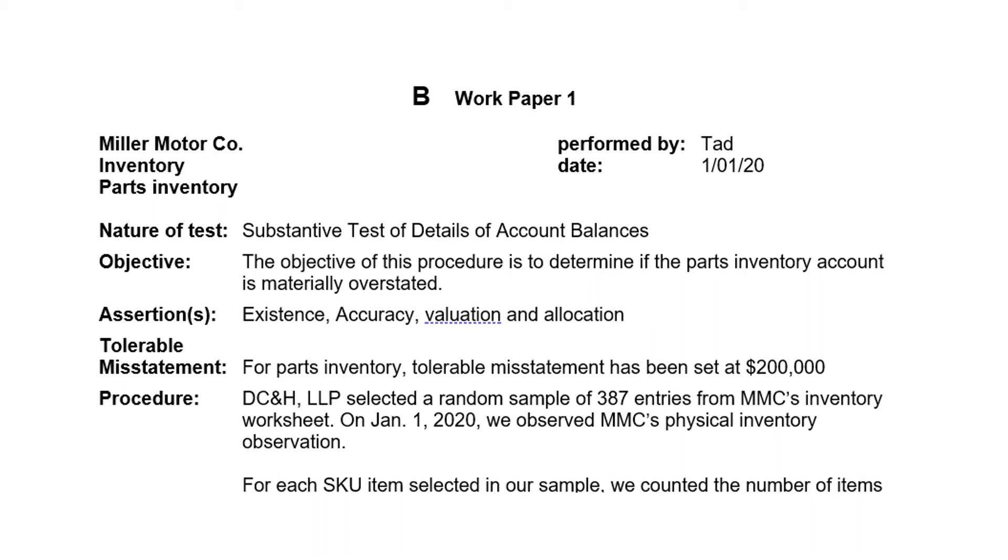Notice the top part of the work papers, work paper one, work paper two, is exactly the same. So we've got Miller Motor Company inventory, parts inventory. So who we're auditing, what account we're auditing, what sub account we're auditing, who did the work and the date they did it. The nature of the test, substantive test of details with account balances, that will be the same for all of our parts inventory work papers. The objective would be the same to determine if parts inventory is materially overstated. The assertions, we're worried primarily about existence and accuracy valuation and allocation. So those are the two assertions we're most concerned about. A tolerable misstatement has been set at $200,000 by the partner.